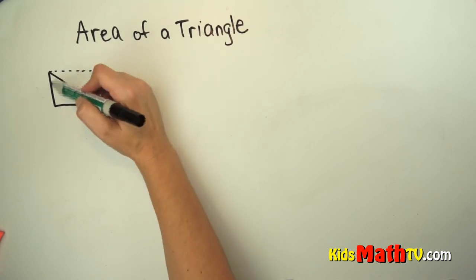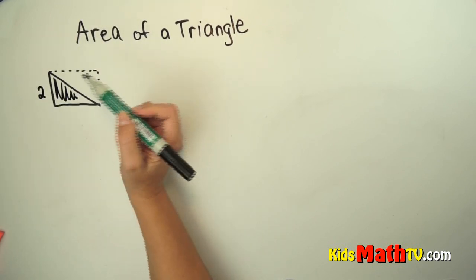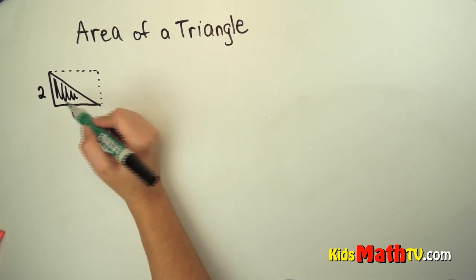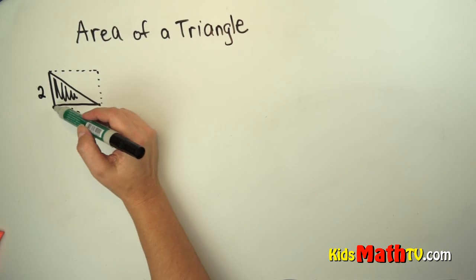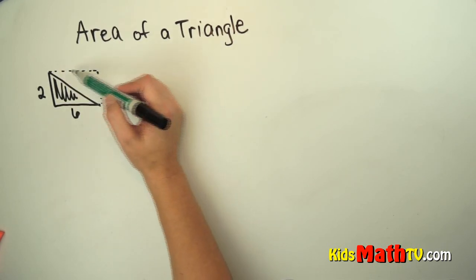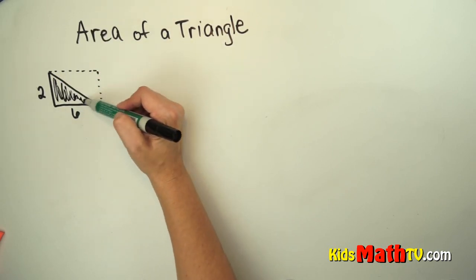So if this triangle right here has one side 2 square units and the other side is 6 units, we can find the area of this rectangle and then split it in half to find the area of just this triangle.